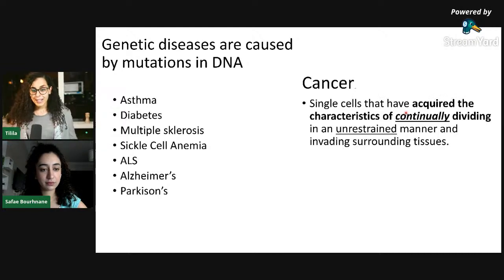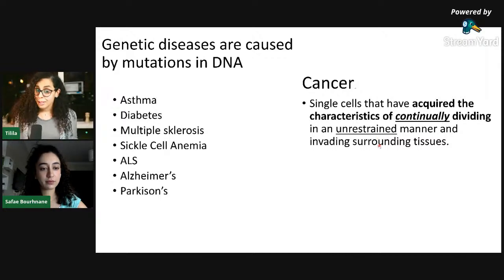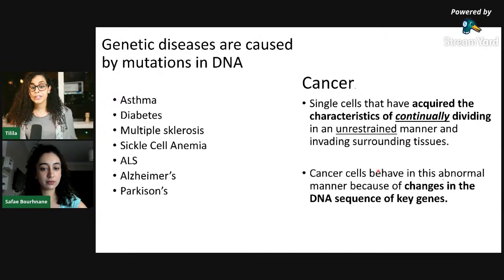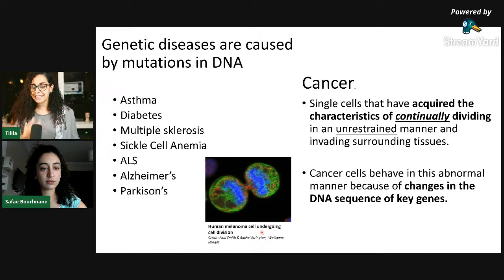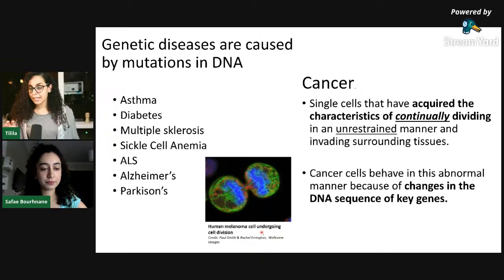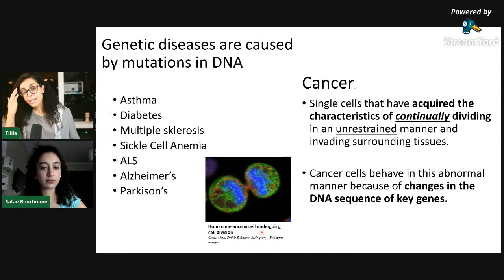Cancer cells have acquired the characteristic of continually dividing in an unrestrained manner, growing and growing and invading surrounding tissue. Why? Because there's a change in their DNA sequence — a mutation — that gives them this characteristic. What you see here is a human melanoma cell undergoing cell division. If we want to understand cancer, we have to look at it at a genetic level. That explains why two people with the same type of cancer — say, liver cancer — can take the same treatment and get completely different results, because at a genetic level they're very different.